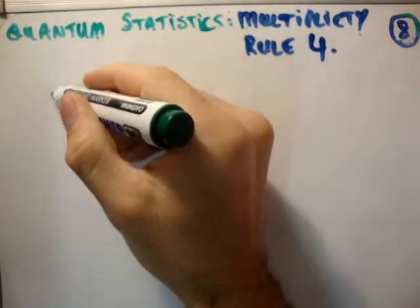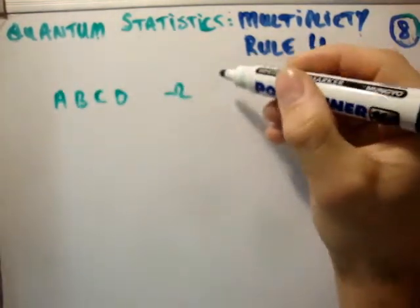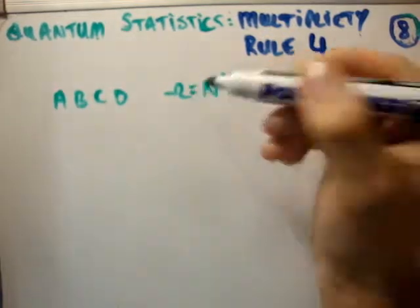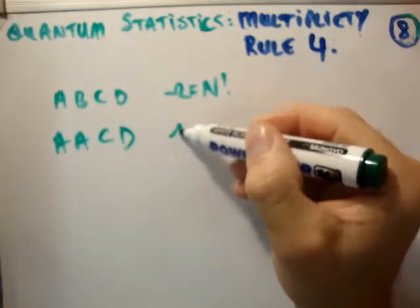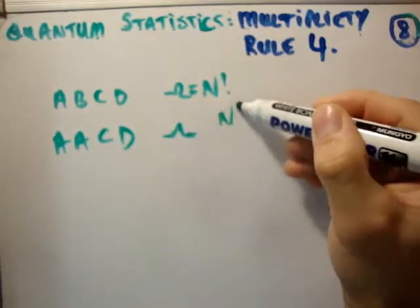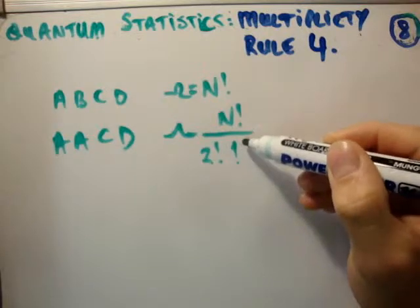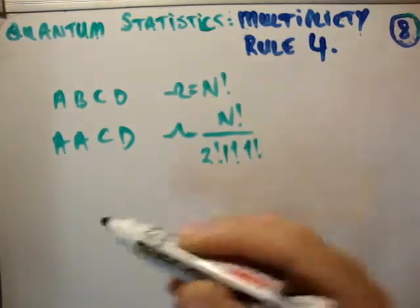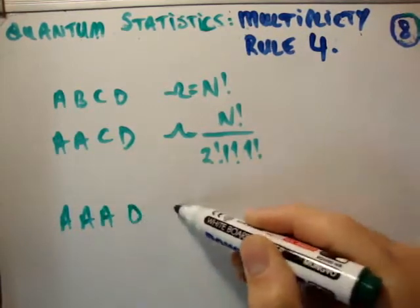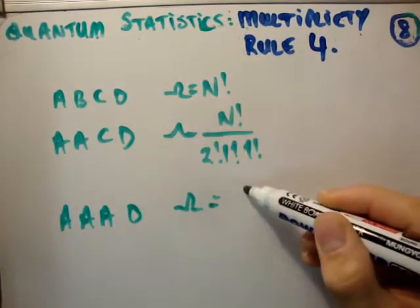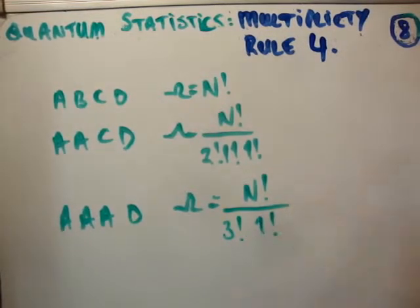So let's say, just to recap, where we had a, b, c, d, we had a multiplicity of n factorial. When we had a, a, c, d, we had a multiplicity of n factorial divided by 2 factorial divided by 1 factorial divided by 1 factorial. And when we had 3 a's and a d, the multiplicity was equal to n factorial divided by 3 factorial divided by 1 factorial.